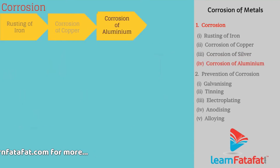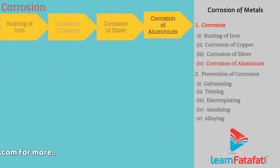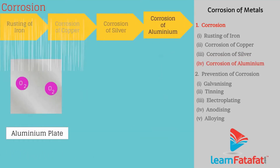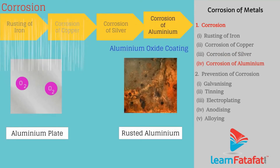Corrosion of Aluminium: Aluminium reacts with atmospheric oxygen and forms a thin layer of aluminium oxide on its surface. This oxide layer prevents further corrosion.